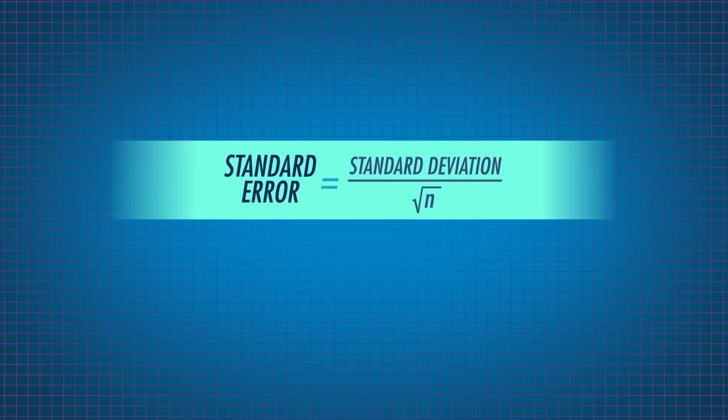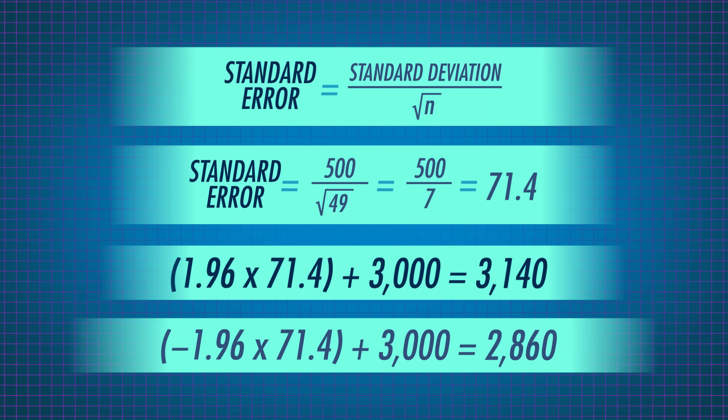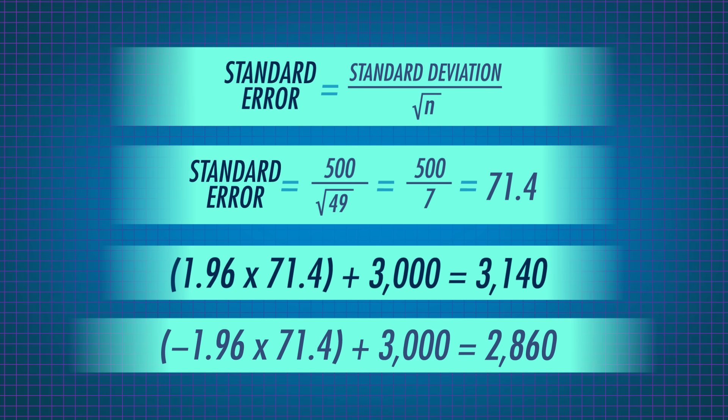But we now need to turn our z-scores back into calorie values. To do so, we multiply by the standard error — 71.4 calories — and add the mean of 3,000 calories, to get the 95% confidence interval for our sample. We think it's likely that the real population mean for number of calories in a chocolate cake is in that range, though we're not sure. What we can have confidence in is that if we're constantly taking samples like this and assume that the true mean is inside every confidence interval, we'll only be wrong 5% of the time.